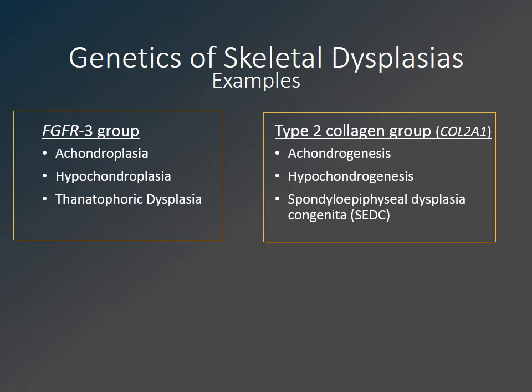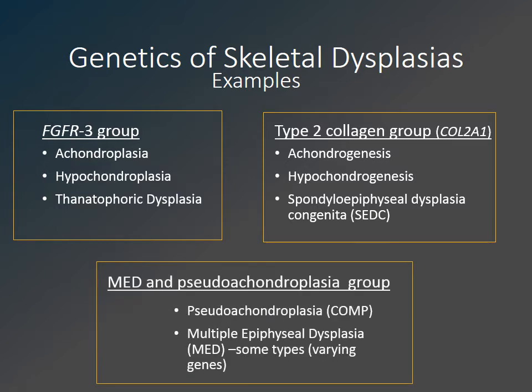The multiple epiphyseal dysplasia and pseudoachondroplasia group is also very common. While pseudoachondroplasia results from a mutation in the COMP gene, MED has multiple types with many different genetic mutations which have been described in addition to the COMP gene.